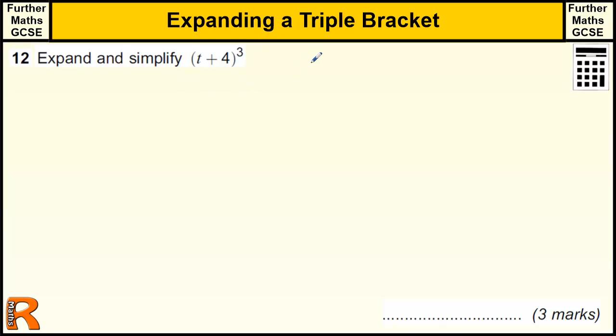Now, you should be familiar with expanding a double bracket. There are some pitfalls with expanding a double bracket. Often I see this being done when people see the double bracket (t + 4) all squared. Often people will put t squared plus 16, which hopefully we should know is wrong because we need to do (t + 4) times (t + 4).